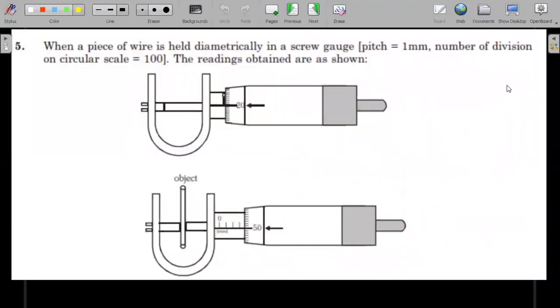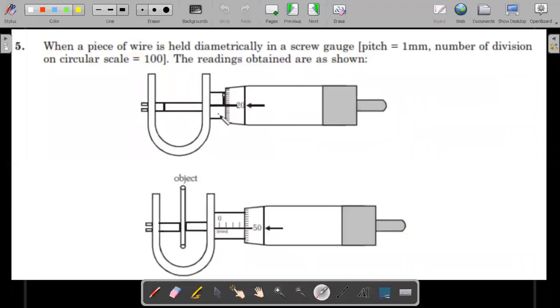Let's look at the question. It's in two pages. We have a lot of diagrams in this question. I'll just scan through the two pages for you. Take a pause or a snapshot and then try to attempt the question. In the first page, it says when a piece of wire is held diametrically in a screw gauge, pitch equals 1mm, number of circular scale divisions is 100. The readings are obtained as shown. You can see two readings, the first one when the jaws are close to each other and the second one when the object is placed to measure its diameter.